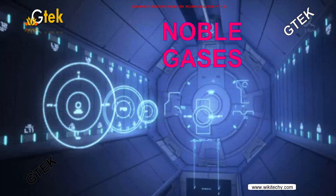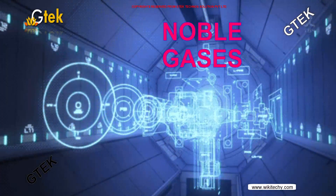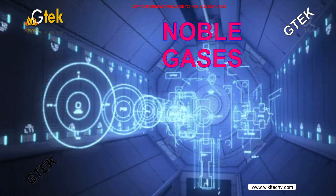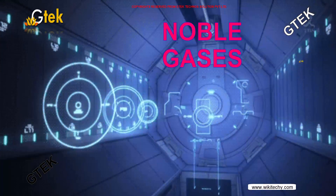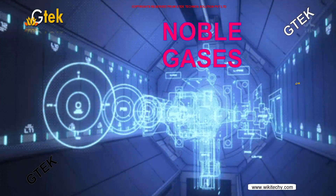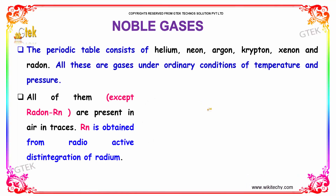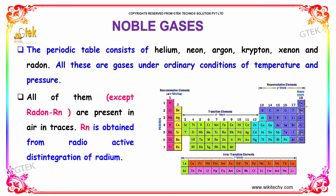Let's discuss the noble gases. This is a more interesting area located in the rightmost part of the periodic table. The noble gases in the periodic table consist of Helium, Neon, Argon, Krypton, Xenon, and Radon.